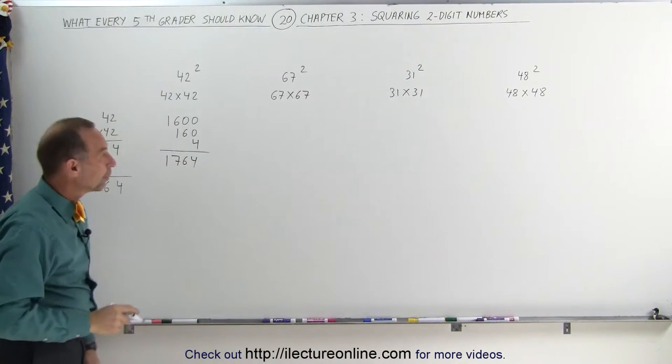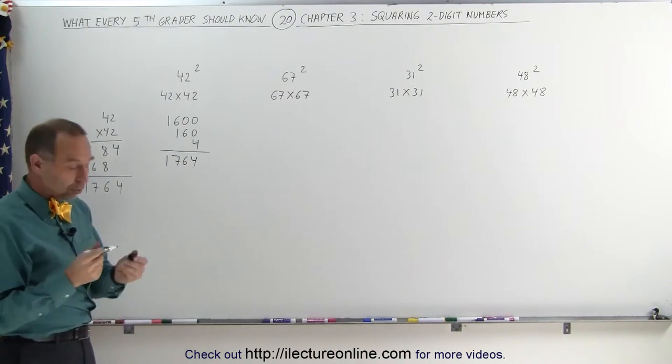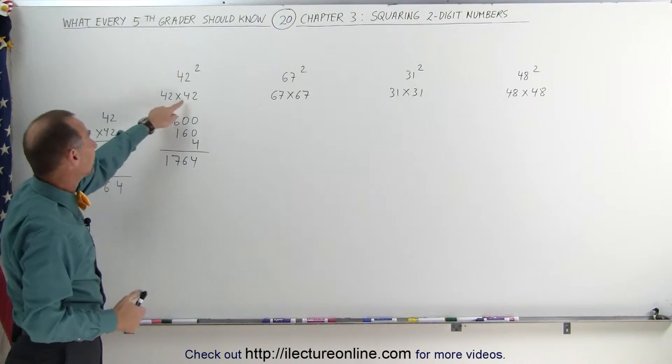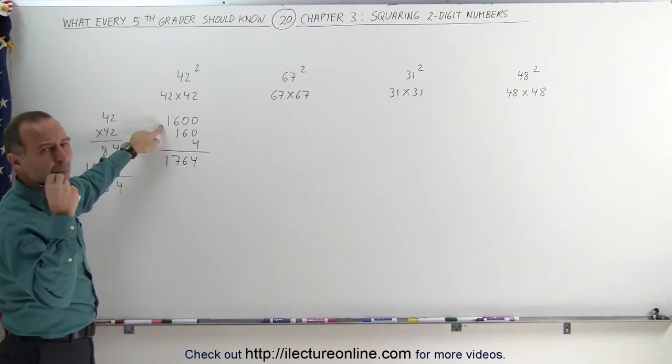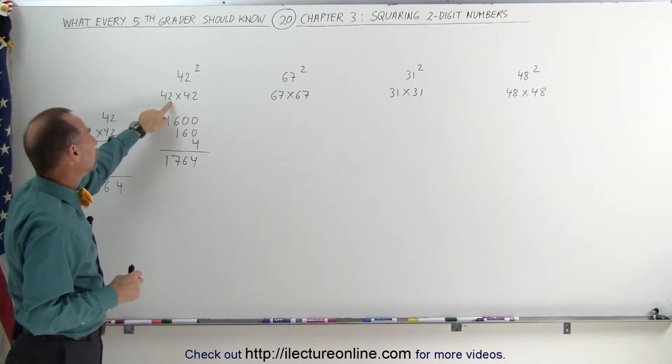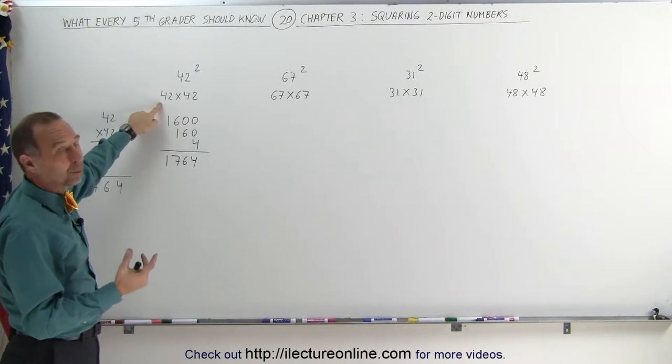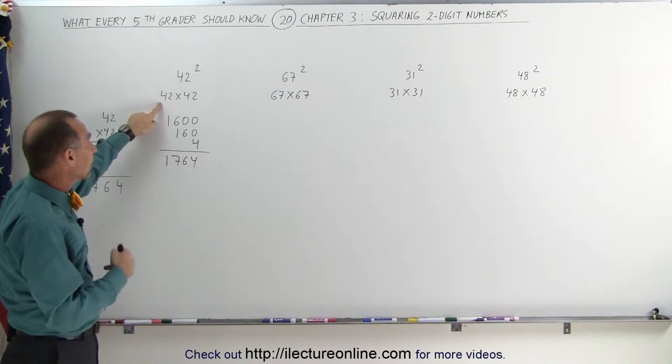Of course, you get the same answer. But that's the technique you would use when you do it in your head. So you go 4 times 4 is 16. Add two zeros, so you get 1,600. You remember 1,600. Now you go 2 times 4, or 2 times 40, which is 80. Double that, you get 160.